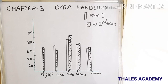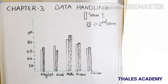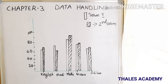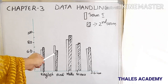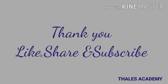The answer to question one: in Mathematics, the child improved his performance the most. Question two: in Social Science, the improvement is least. Question three: in Hindi, the performance has gone down. This is the end of Part 3 of Data Handling, Chapter 3, Mathematics Class 7.